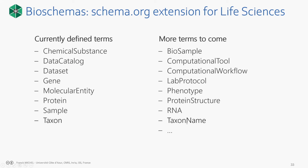BioSchemas reuses and extends schema.org to keep things simple — the goal is not to produce a large domain ontology, but to have a high-level way of marking up things on a web page. The project provides guidelines for using terms to describe genes, proteins, chemical substances, samples, biosamples, phenotypes, protein structures, and more. It is flexible: these are recommendations, not strict relational database rules. I worked with a biodiversity group on the definition of two terms — 'Taxon' and 'TaxonName' — so there is now a way to annotate web pages about specific taxa.